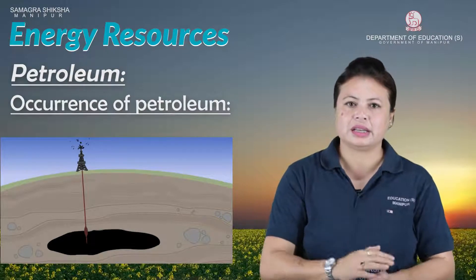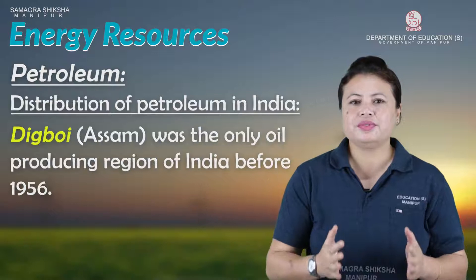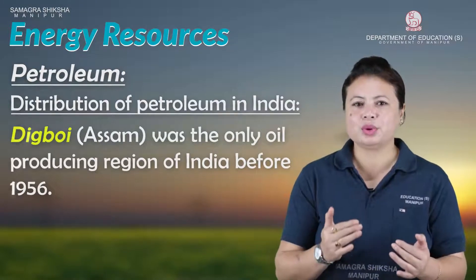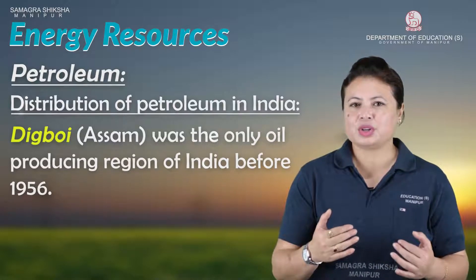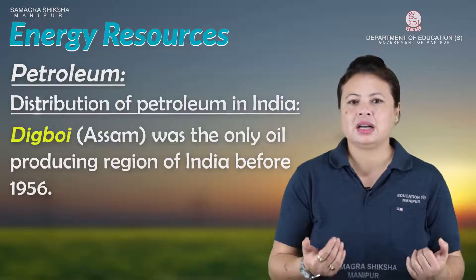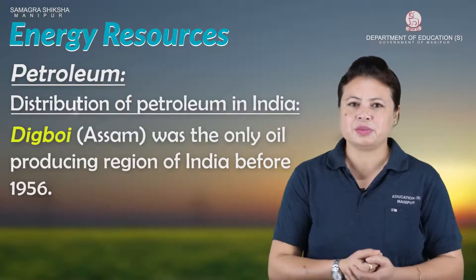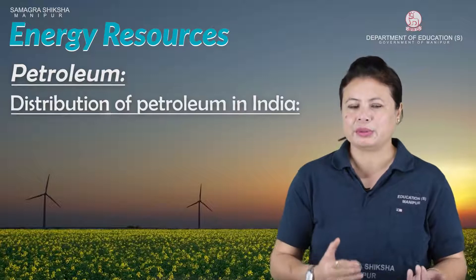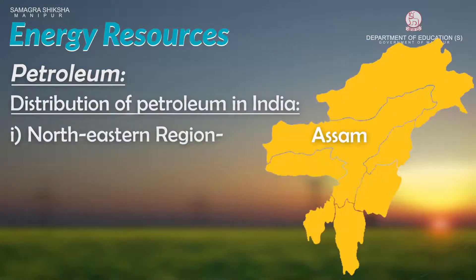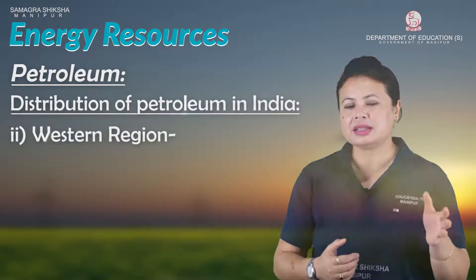Now, the distribution of petroleum in India. In 1956, oil production began. The major oil-producing regions include the north-eastern region — states like Assam, Arunachal Pradesh, and Nagaland. On the western side, there is a huge amount of petroleum production in Gujarat.